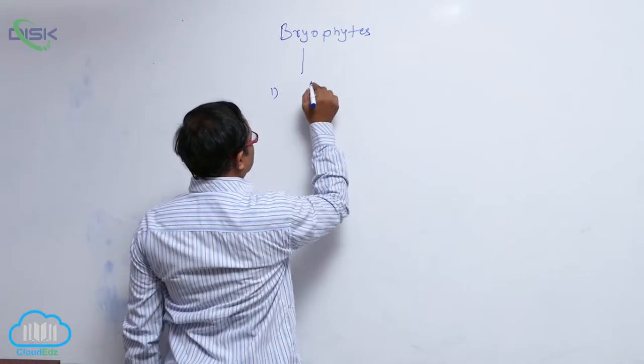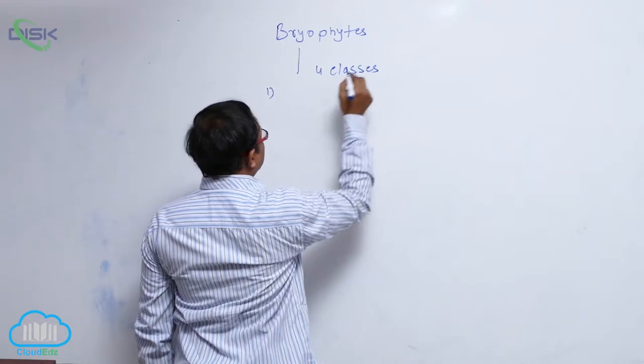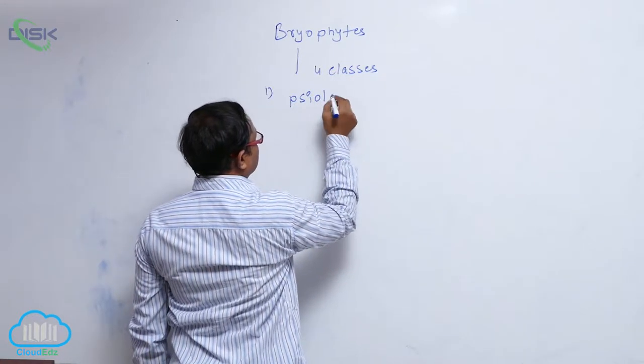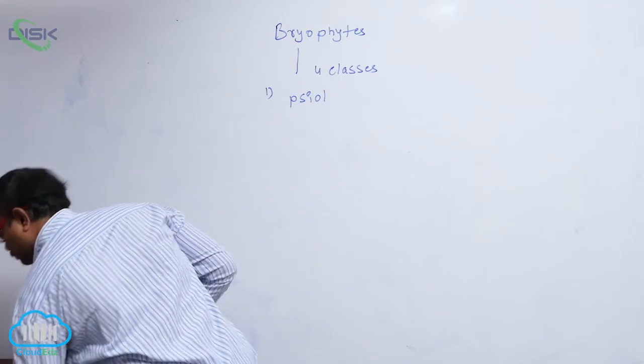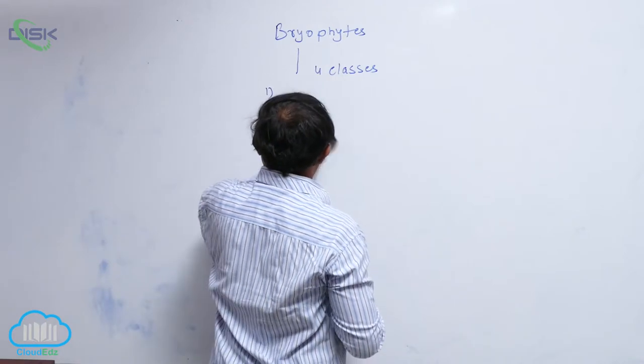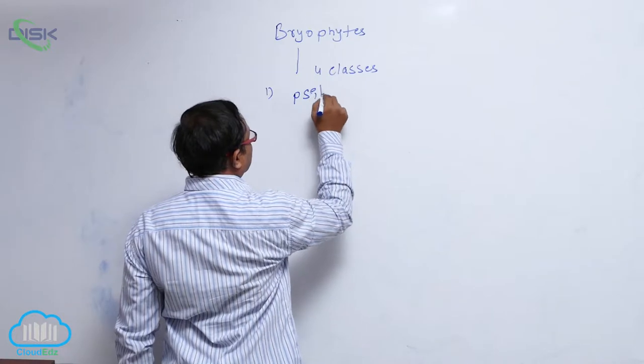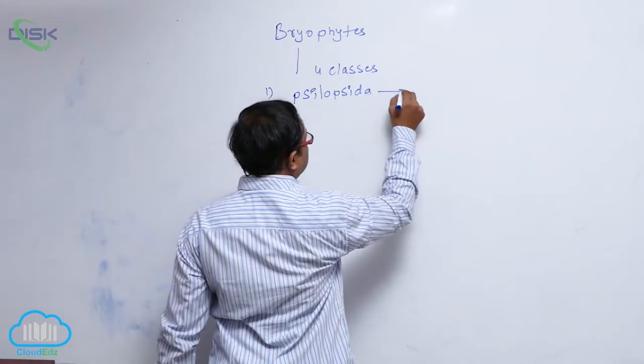Pteridophytes are divided into four classes. The first one is Psilopsida, it is known as Psilotum.